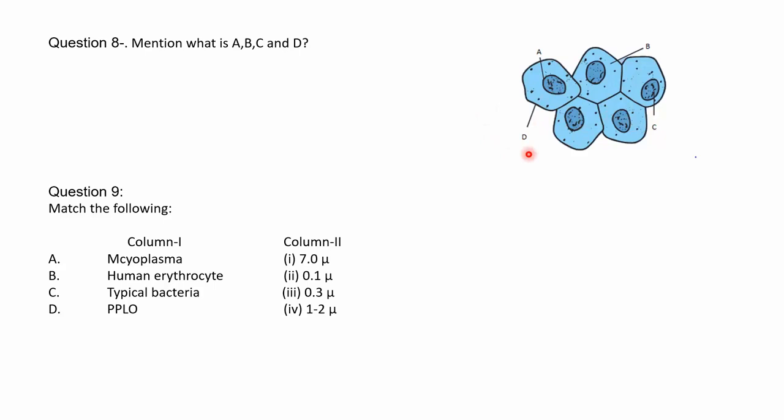Matching organisms to their sizes: mycoplasma has a size of 0.3 micron; human erythrocytes have a size of 7 micron; typical bacteria have a size range of 1 to 2 micron; and PPLOs (pleuro-pneumonia-like organisms), the smallest living organisms, have a size of 0.1 micron.